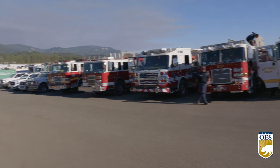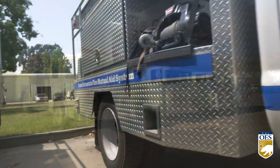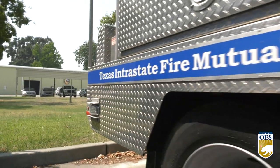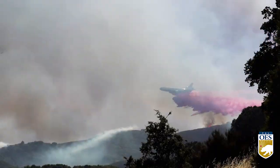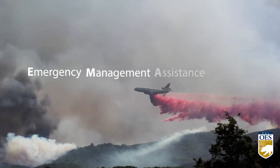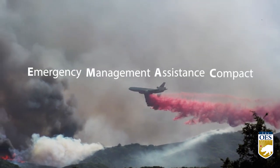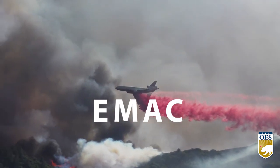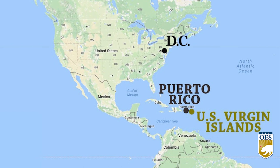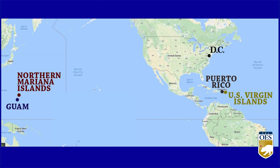The Cal OES Mutual Aid System is the backbone of emergency management, moving resources between states by helping communities and neighbors as they respond to disaster. Within the Mutual Aid System is the Emergency Management Assistance Compact, commonly known as EMAC. EMAC includes all 50 states, as well as the District of Columbia, Puerto Rico, the U.S. Virgin Islands, Guam, and the Northern Mariana Islands.